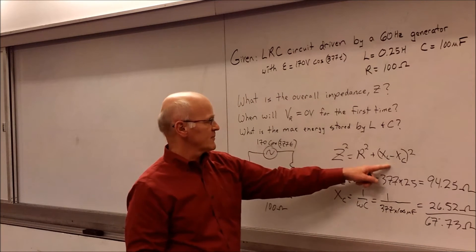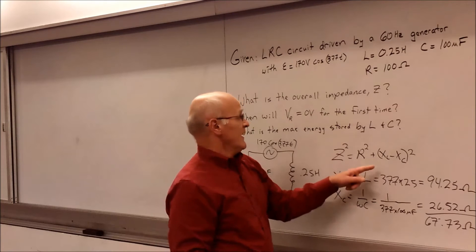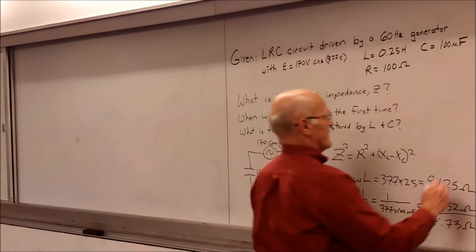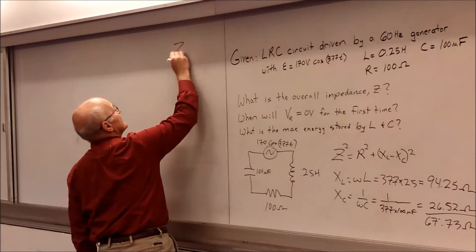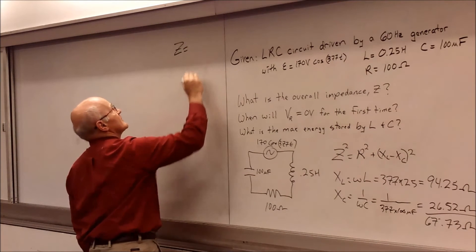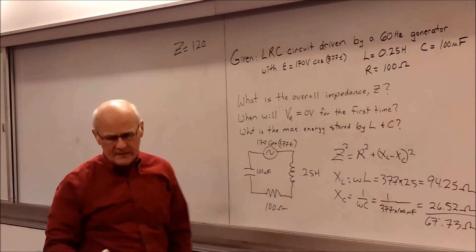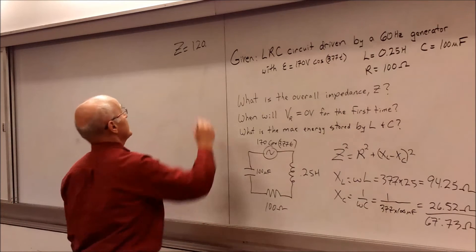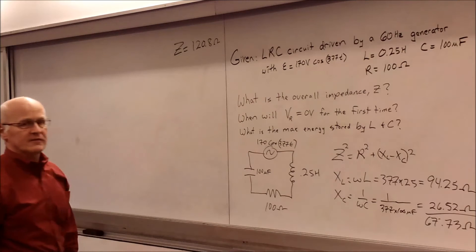So that's what we need to plug into this part over here. So we're going to take 67.73 and square that. Then add that to 100 squared. And we'll end up with a value for Z. And I'll just go ahead and write the Z value then over here. And so Z turns out to be, I think, 120. And let me check my notes for that. We've got 120.8. Okay, so that's our first step.